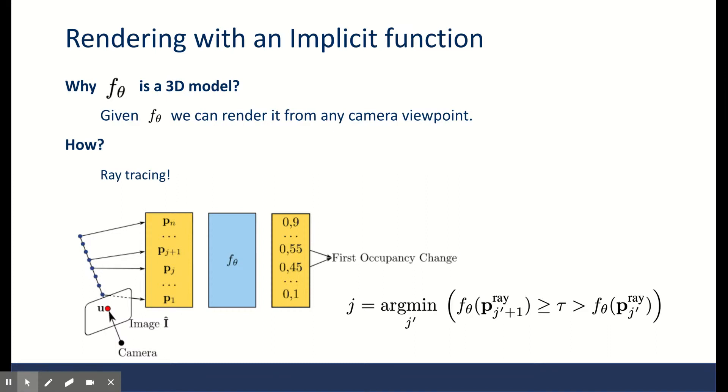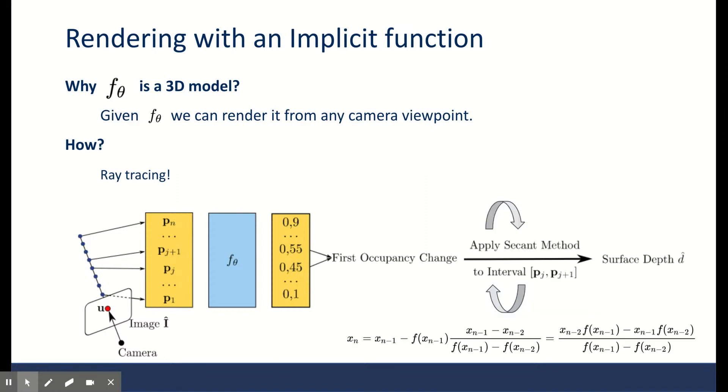As shown here, then we find the two closest points around tau. For example, for a tau of half, 0.5, Pj and Pj+1 that are returning 0.45 and 0.55 are the closest ones. So how do we get these two points? By performing an argmin operation. This is a red flag because argmin is not readily backpropagatable. Take note of this argmin function.